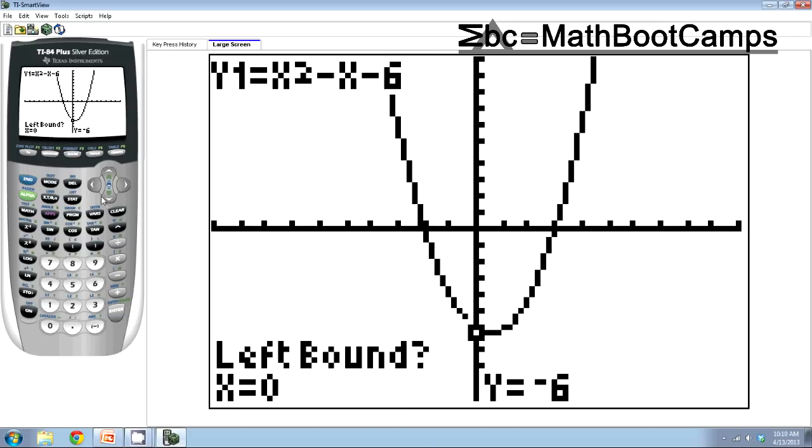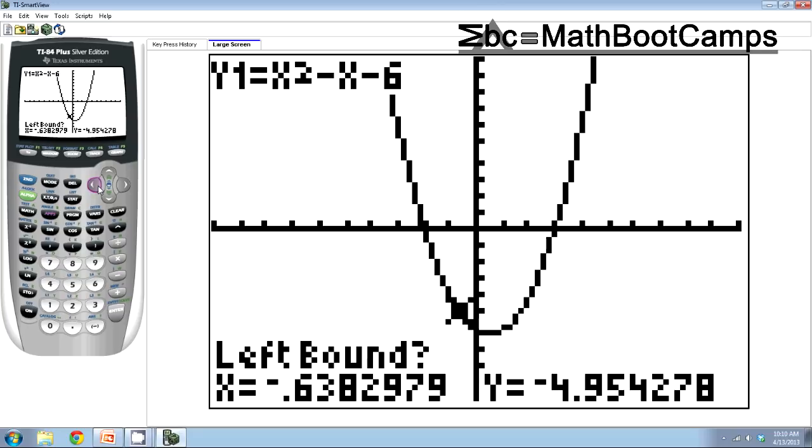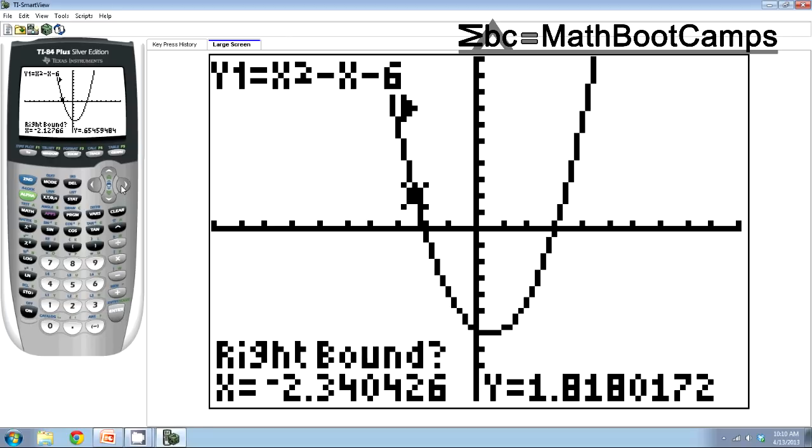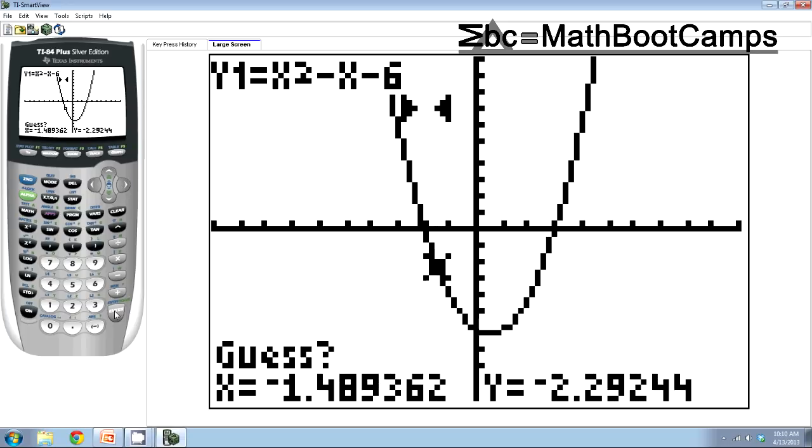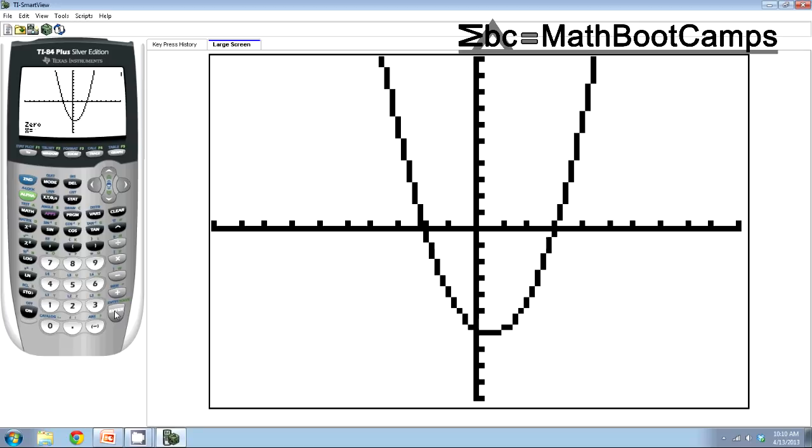And so you notice the first thing it's asking me for is a left bound. What it's asking you to do is to get on the left-hand side of where you think the graph is crossing the x-axis. Obviously I think it's crossing right here, so I'm going to get on the left-hand side, press enter, then get somewhere on the right-hand side, doesn't really matter where, press enter. Your guess doesn't have to be that good, so I usually just press enter. And here we go. Here's our first intercept.